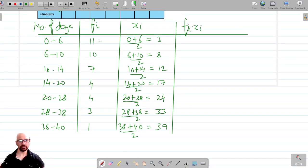So we can simply rely on the direct method, that is to find sigma fi into xi. This is 11 into 3 is 33, 10 times 8 is 80, 7 into 12 is 84, 4 into 17 is 68, 4 into 24 is 96, 3 into 33 is 99, and 1 into 39 is 39.